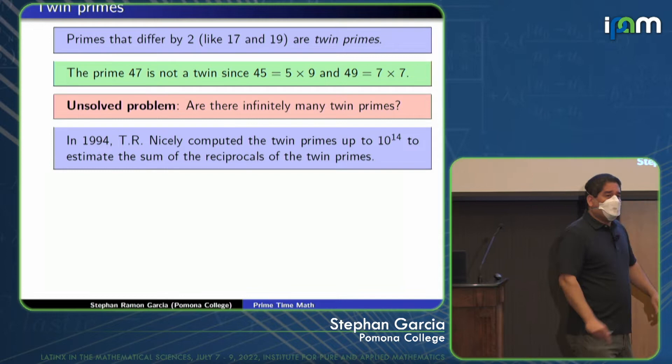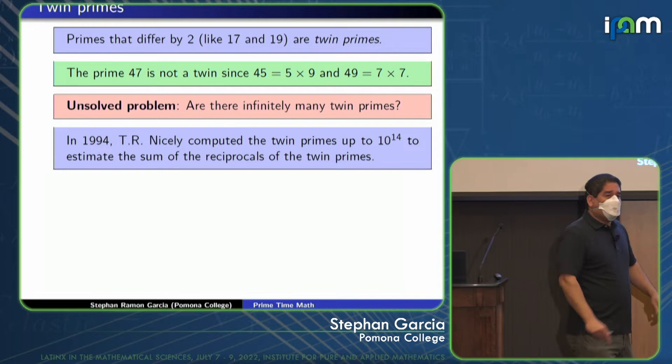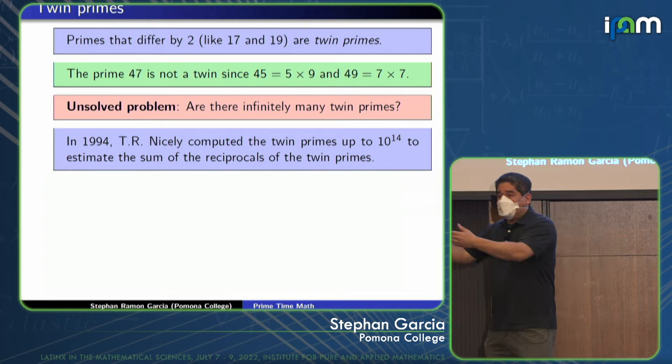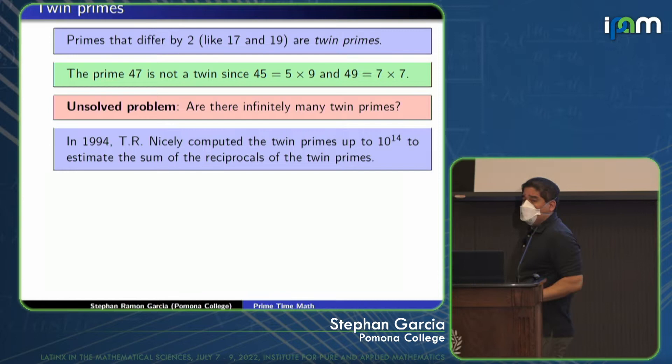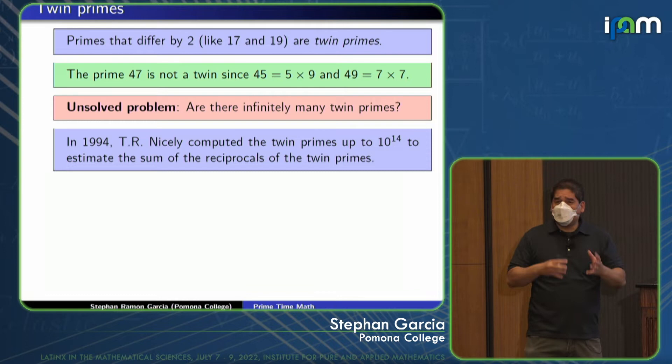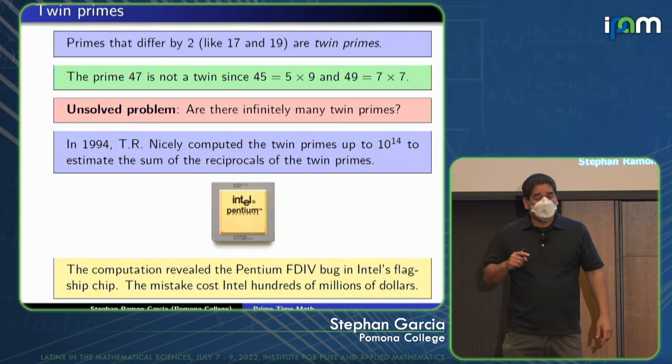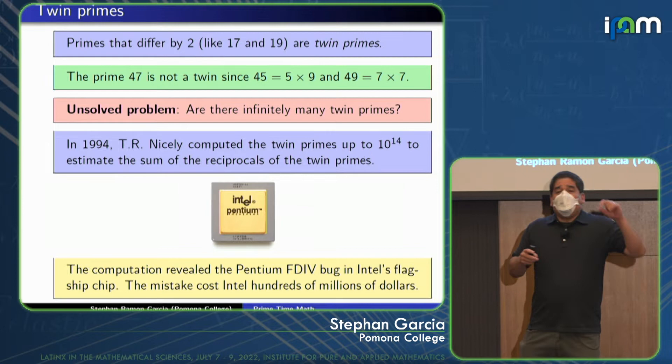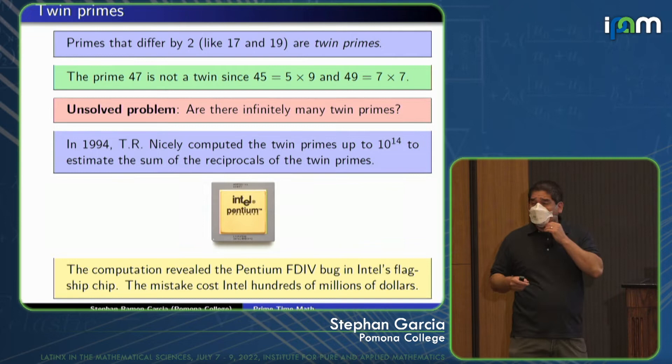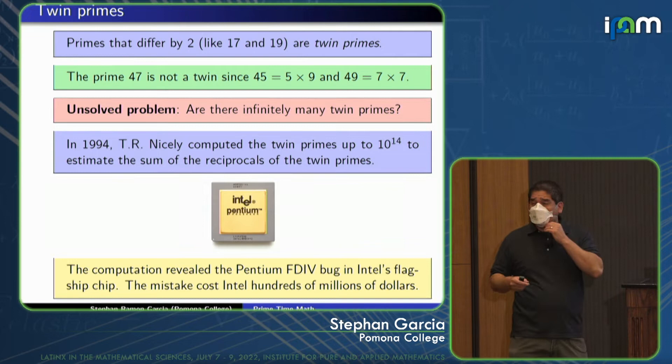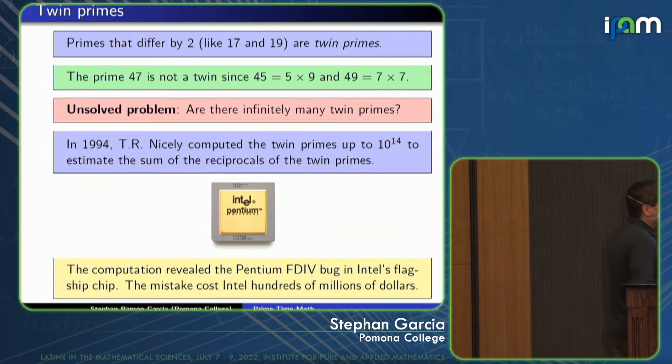You might say, yeah, this is too abstract. I prefer applications. What do I mean by applications? Well, you probably mean money. TR Nicely, back in 1994, computed all the twin primes up to 10 to the 14 to do some experiments in analytic number theory related to what is called Brun's constant. The thing that Nicely noticed is that the computer he was using was making mistakes. It turned out that the Pentium chip, which was Intel's flagship product, had a problem. It couldn't do math correctly. It had a floating point division bug built into it. And, of course, for a computer not to be able to do math accurately is bad. And that costs Intel hundreds of millions of dollars, allegedly. So that's an application. It's a negative application. But it's money.